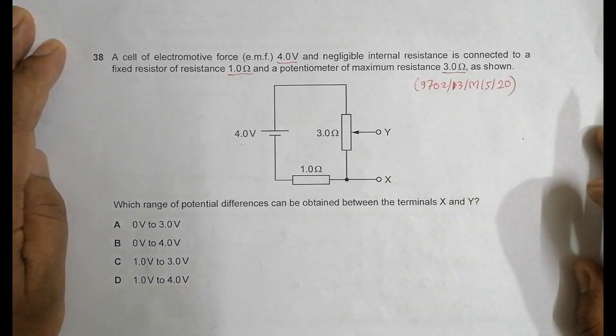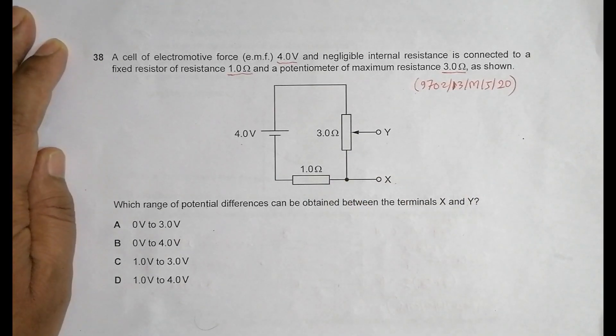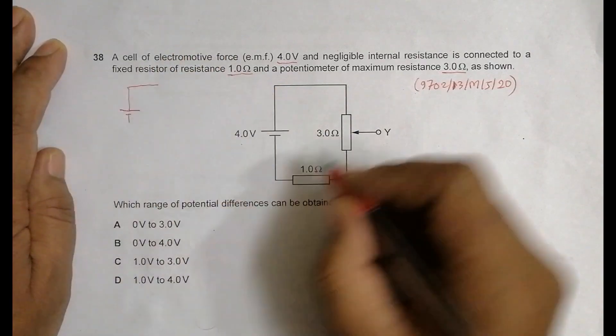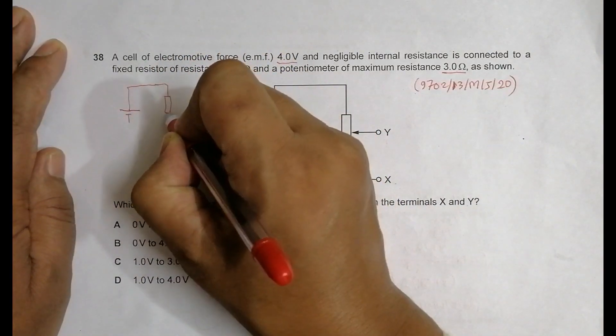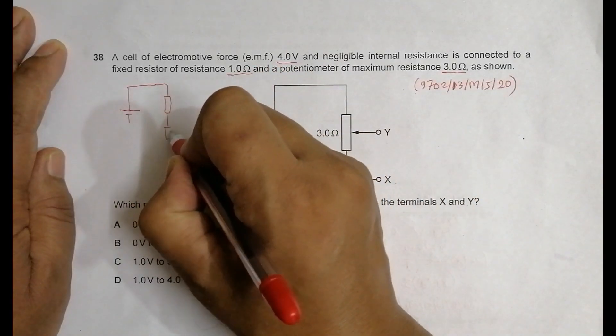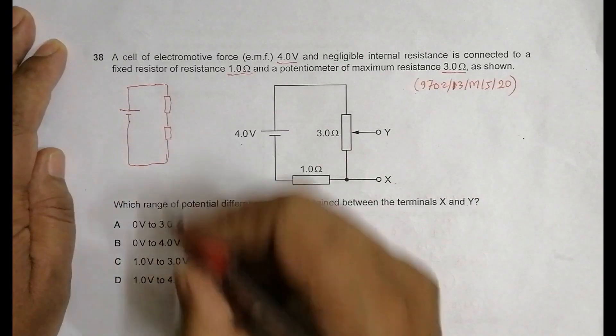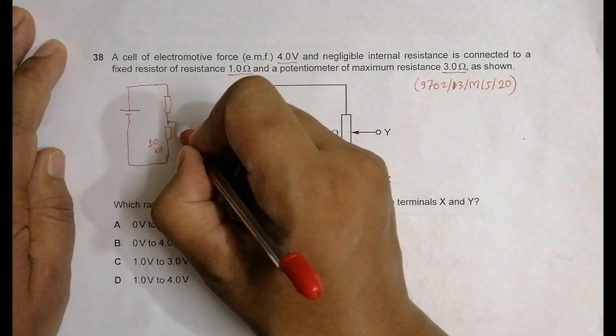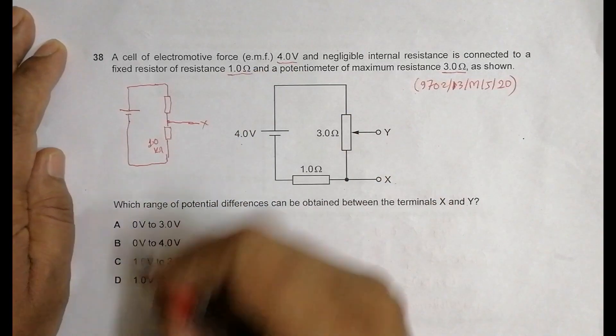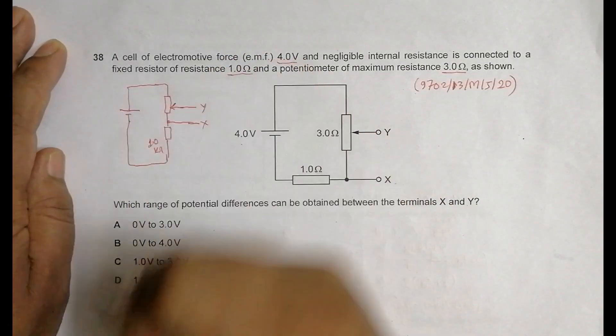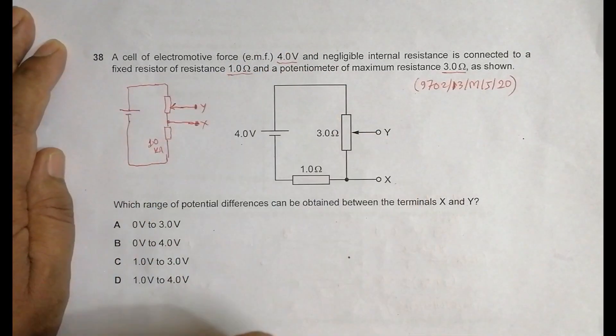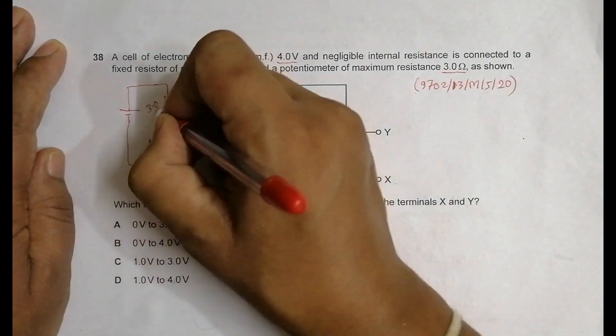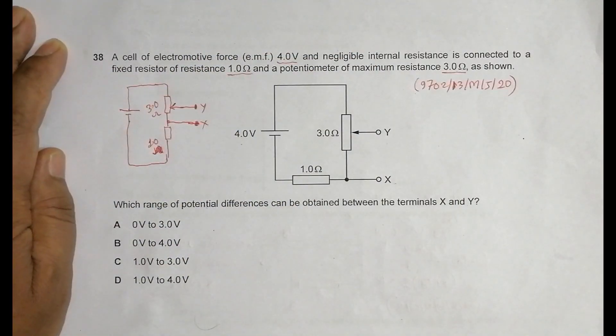So this circuit can be expressed or rewritten like this. We have the source here, we have this resistor here, then we have this resistor, and then like this. This is 1.0 ohm and our terminals are, this terminal is X and this is Y. The terminals are X and Y, and this whole thing is 3.0 ohm. I forgot, so this is 3.0 ohm.